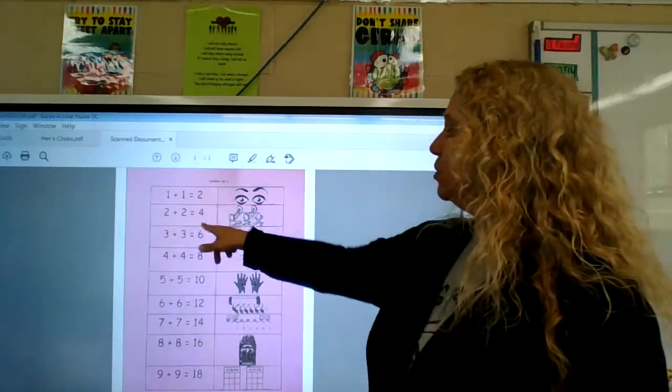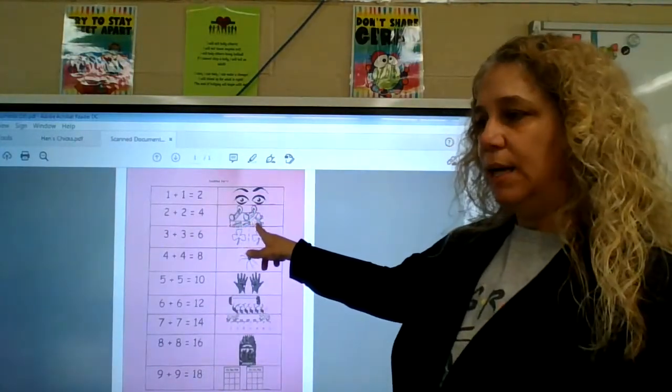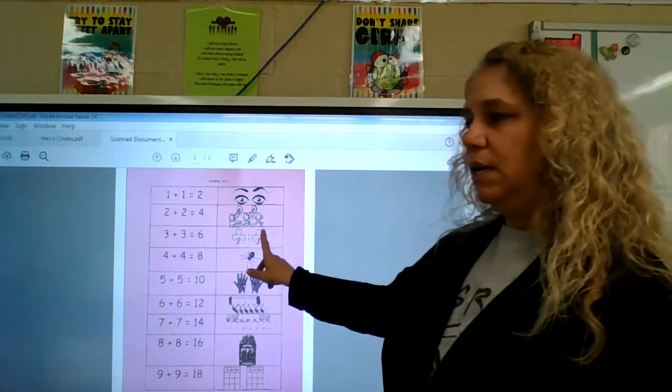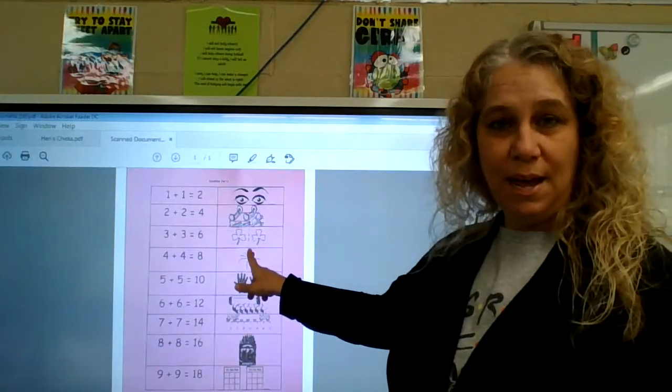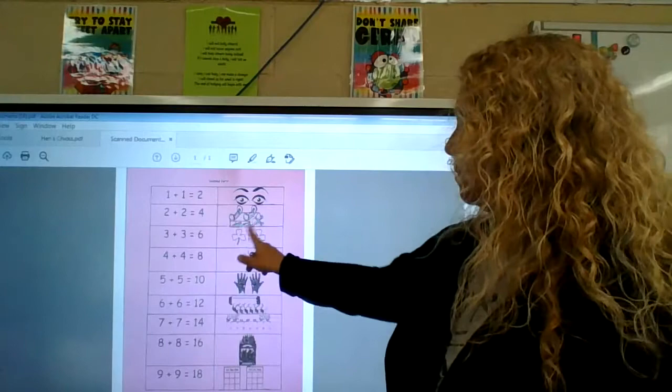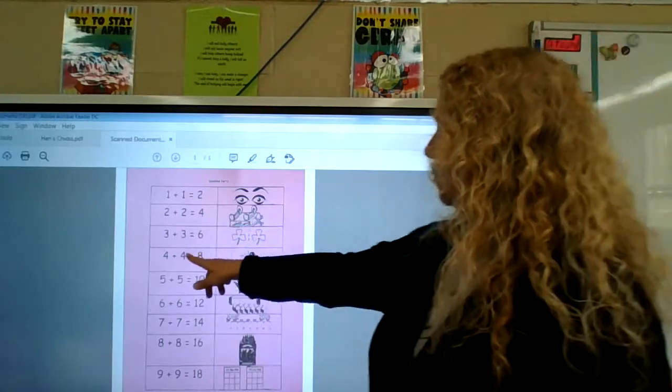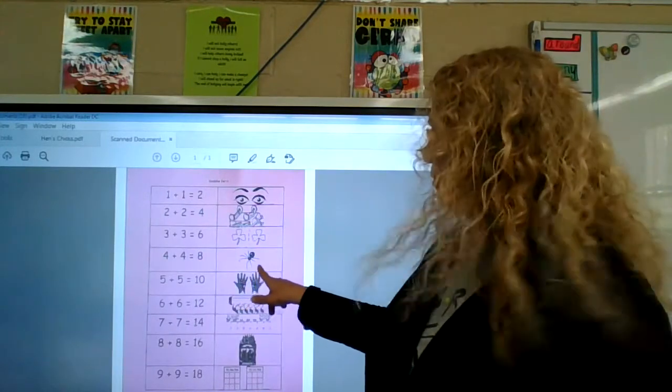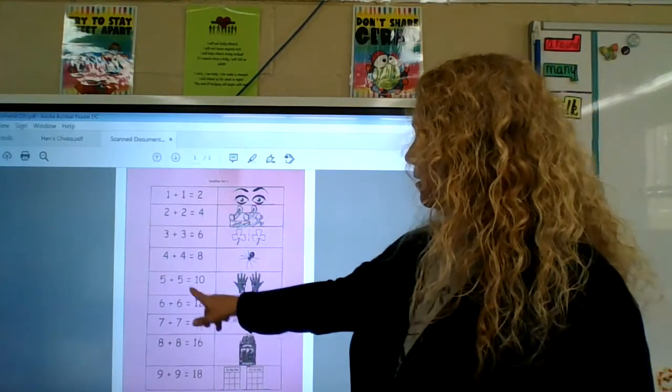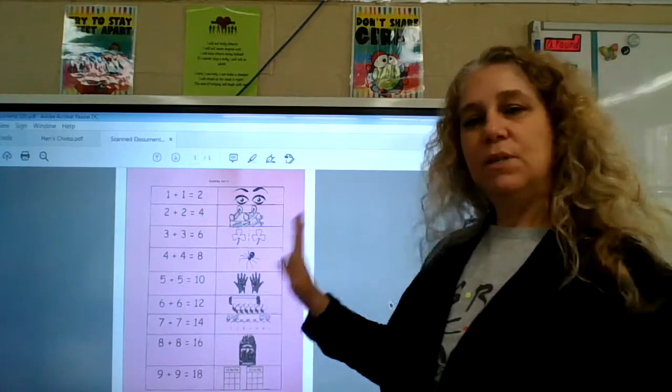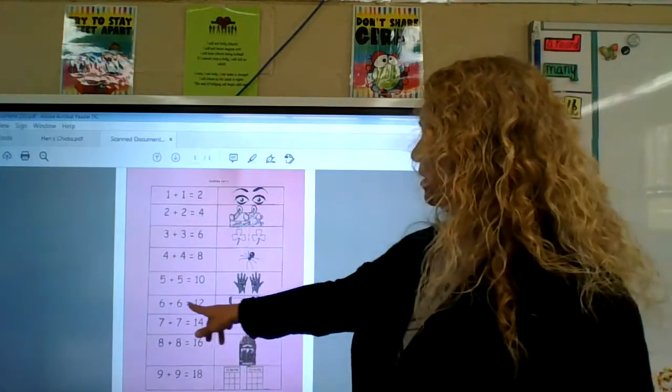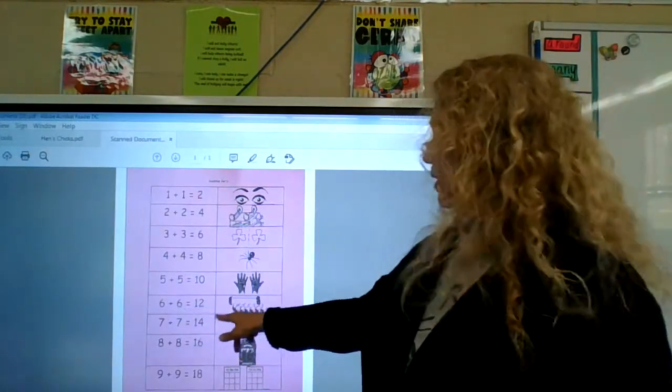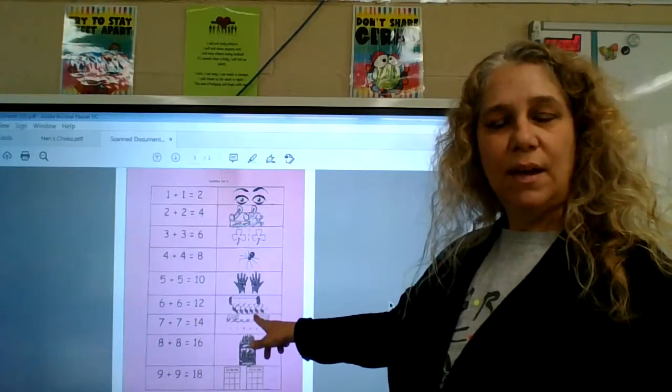Okay, then 2 plus 2 equals 4. That was a wagon. 3 plus 3 equals 6. We're doing that one today. Two shamrocks. 4 plus 4 equals 8. That's the one I did with you last lesson. 4 on each side. 5 plus 5 equals 10.